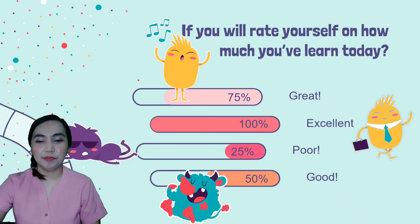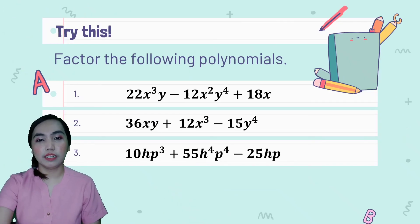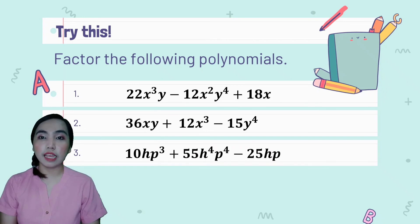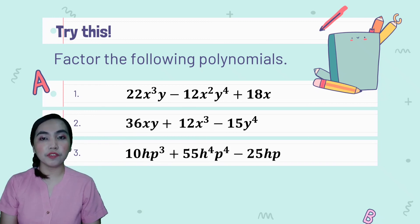Now let's try this! Let's factor the following polynomials. Number 1: 22x³y minus 12x²y⁴ plus 18x. Number 2: 36xy plus 12x³ minus 15y⁴. Number 3: 10hp³ plus 55h⁴p⁴ minus 25hp.